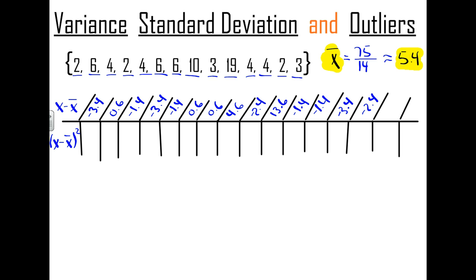So we subtracted each element in our data set from the average, giving us all of the values in blue. To calculate the variance and then the standard deviation, you need to square all of those values. For example, squaring negative 3.4 gives 11.6. We'll do all these squared values in green.